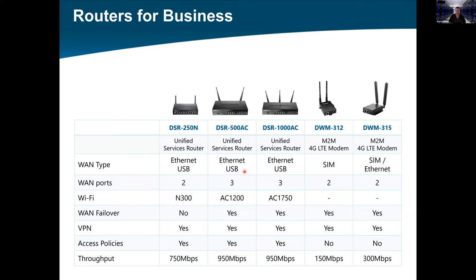For routers in the business section: the DSR-250N is at the entry level. Today's demo focuses on the DSR-1000AC, which has AC1750 dual-band Wi-Fi. There's also a new 4G modem releasing in a couple of weeks with a higher cat rating for faster speeds, and the router features 950 Mbps throughput from WAN.